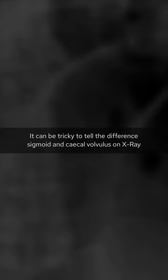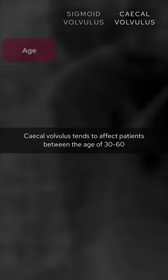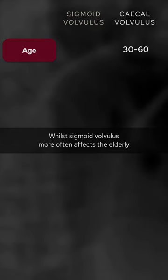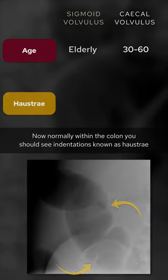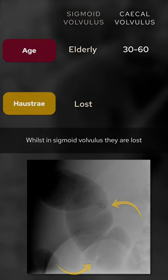It can be tricky to tell the difference between sigmoid and cecal volvulus on x-ray. Let's have a look at how they differ. Cecal volvulus tends to affect patients between the age of 30 to 60, whilst sigmoid volvulus more often affects the elderly. Now, normally within the colon you should see indentations known as haustra. In cecal volvulus these haustra are usually maintained, whilst in sigmoid volvulus they are lost.